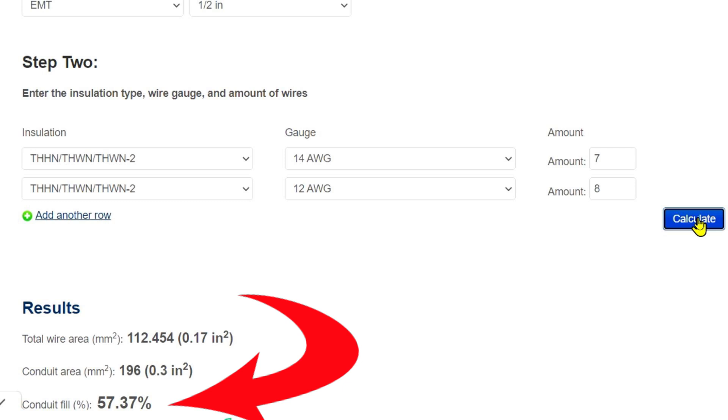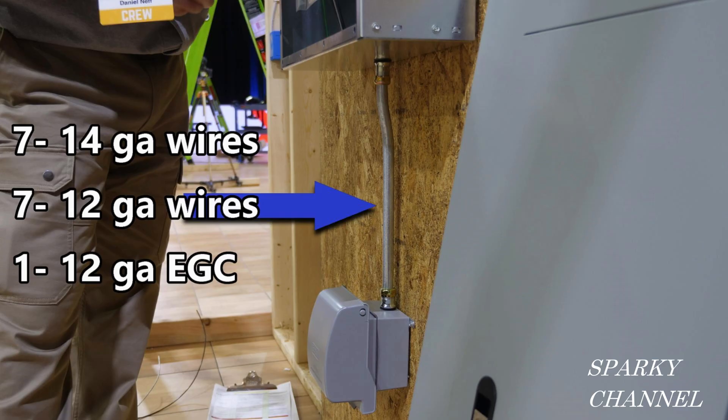So because it's less than 24 inches, that is what we call a nipple. The EMT nipple is less than 24 inches. We can fill it up to 60%, and it comes out at 57.37%. Of course, I don't recommend stuffing a little EMT like that with so many wires, but I want you to be aware of the code.